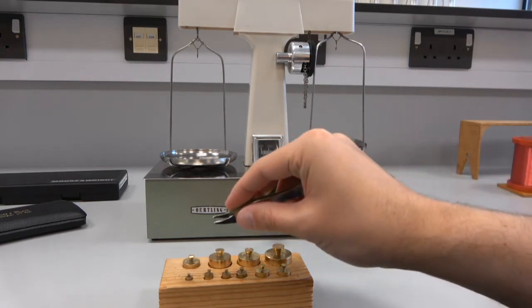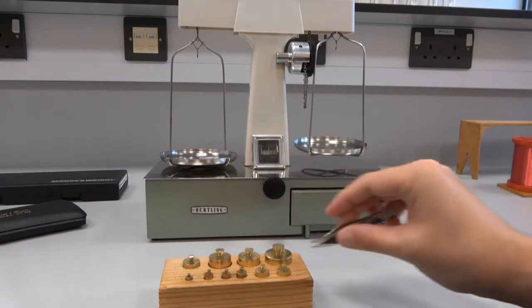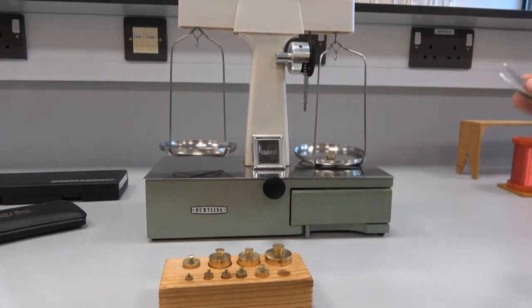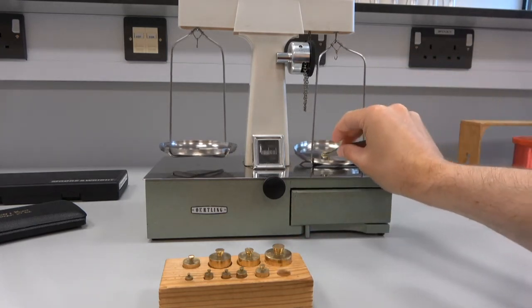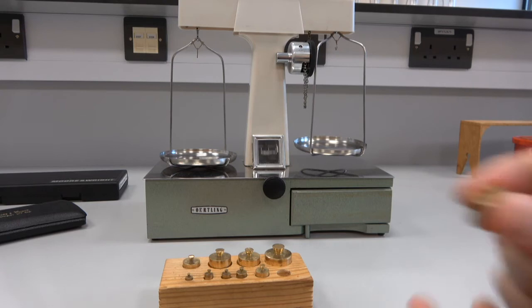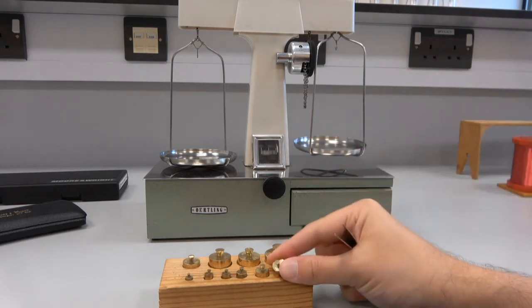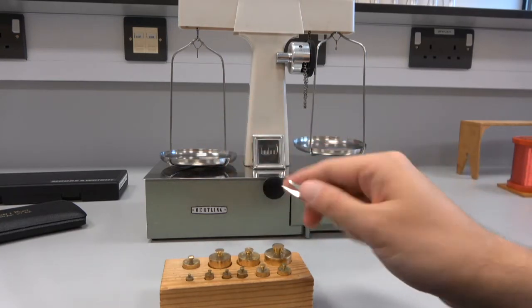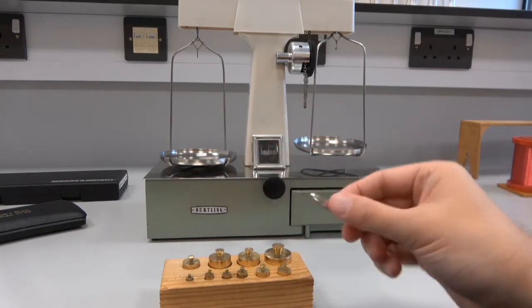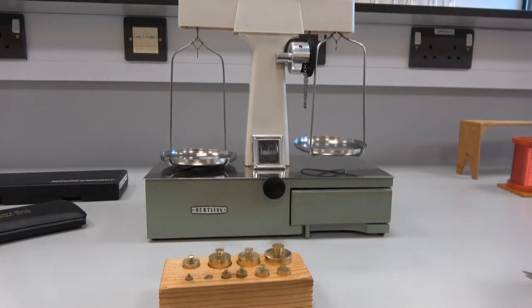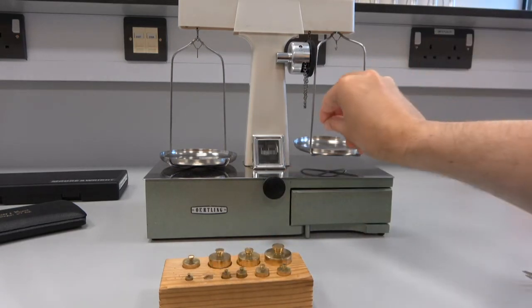So we want to take the masses. And we might start with one that's probably too heavy. So we know that this is the, I think this is a five gram, no, this is 10 grams, actually. So the 10 gram mass, that weighs less than 10 grams. I actually know roughly what the mass is, so I'm going to cut to two grams.